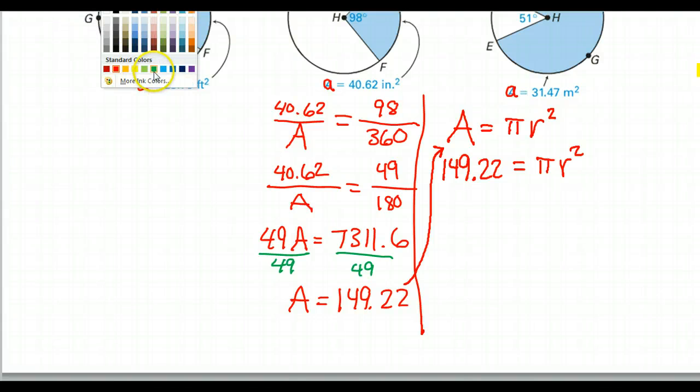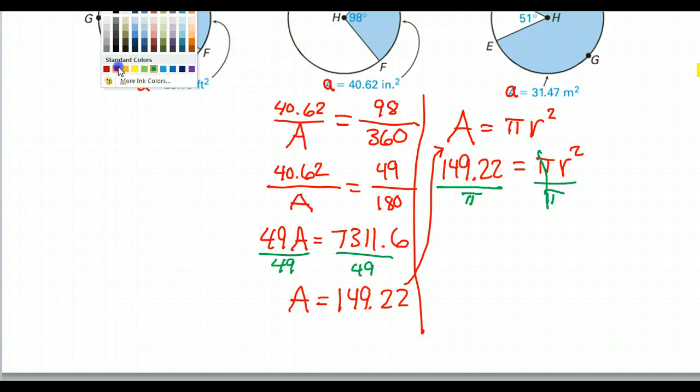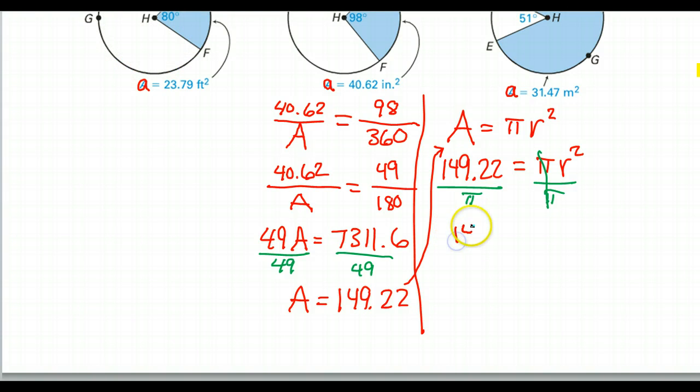To get r squared by itself, we will divide both sides by pi. So I'm just going to go divide by pi, divide by pi. And then I'm going to wind up taking the square root, but I'm going to recopy this.